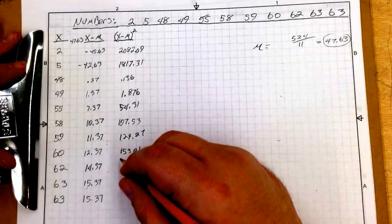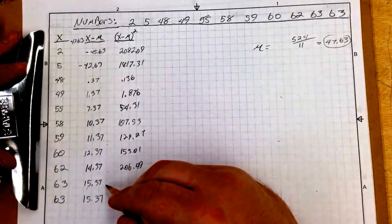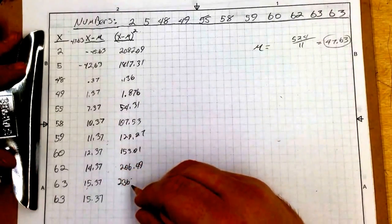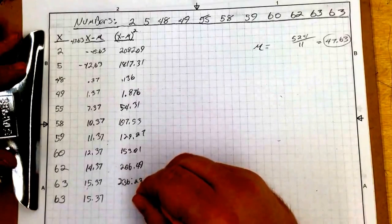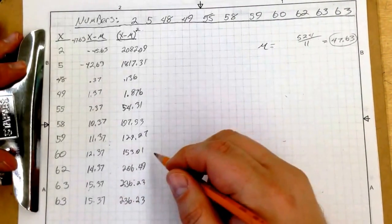12.37 squared is 153.01. 14.37 squared is 206.49. 15.37 squared is 236.23. And it's the same number there.